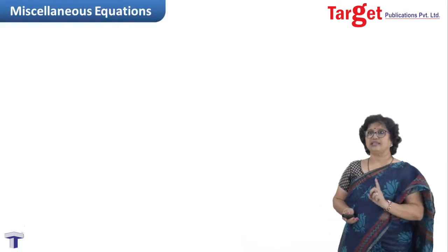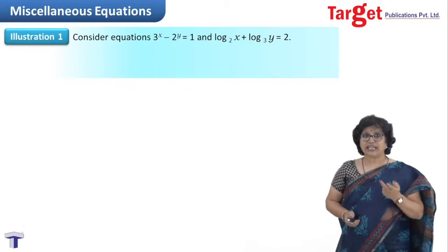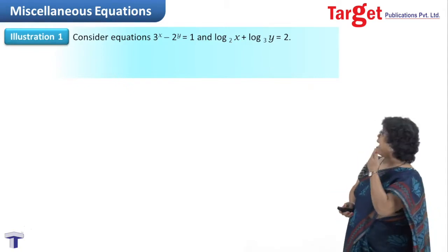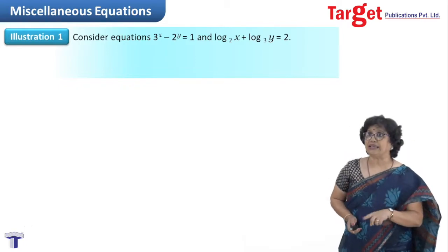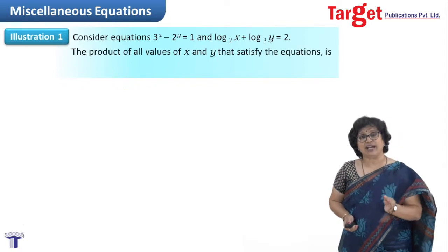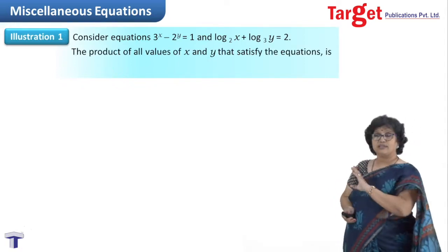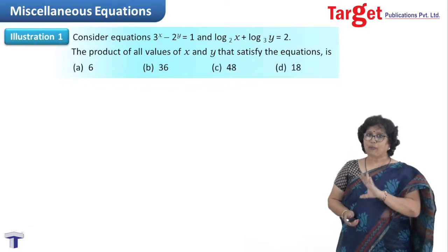My first illustration is that we have been given two equations: 3^x - 2^y = 1 and log_2(x) + log_3(y) = 2. The product of all values of x and y that satisfy the equations is, and we have been given four options. We have to pick the correct one.